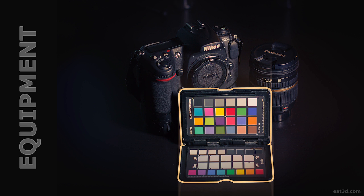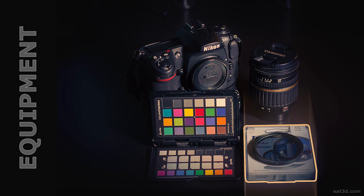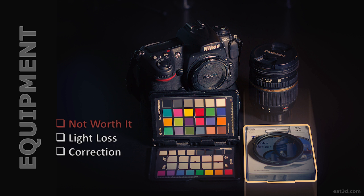This is the ColorChecker Passport by X-Rite. I love it because it's portable, accurate, and it's got a really good gray reference on the backside of the ColorChecker matrix, which we can use to set our custom white balance. As for circular polarizers — my general take is they're not worth it. You'll experience at least a stop of light loss, which could impact ISO and noise quality and affect your correction settings. Unless you're cross-polarizing — polarizing your light source and then linearly polarizing at your lens — you're really not going to get the benefits.